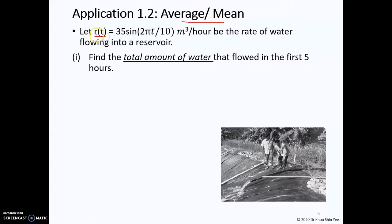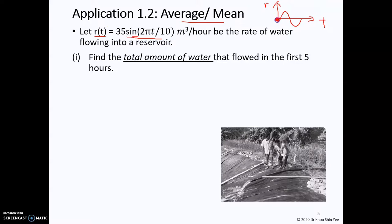We have r as a function of t, given in a sine function. You can draw r with respect to t and it follows a sine curve. At t equal to 0, sine of 0 gives 0, multiplied by 35 gives r equal to 0. The amplitude is 35, and the argument includes 2π divided by 10.